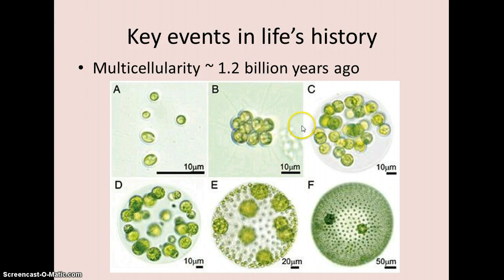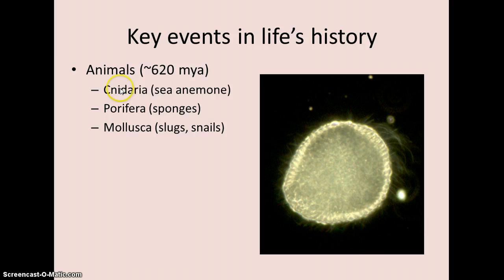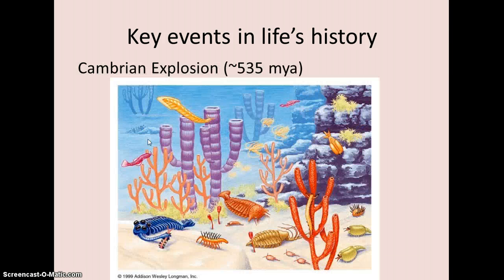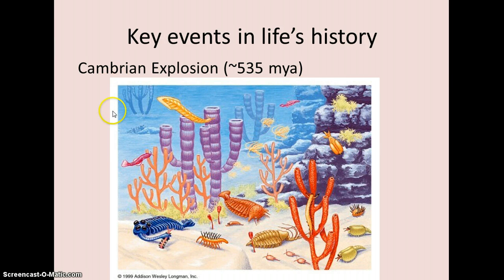Now you start to get development of multicellular organisms — some algae living in colonial forms that aren't true multicellularity but are starting to get there. Then we start to get development of animals about 620 million years ago — primitive ones like cnidarians, sea anemones, jellyfish, sponges, and mollusks. About 535 million years ago we have what's known as the Cambrian Explosion, in which the diversity of animal life diversified greatly in a relatively short geological period, and the major phyla of animals we see now evolved. This is illustrated by weird fossils from the Burgess Shale in western Canada.